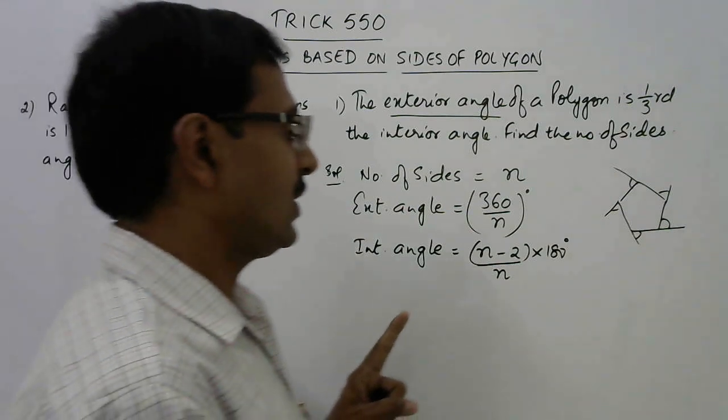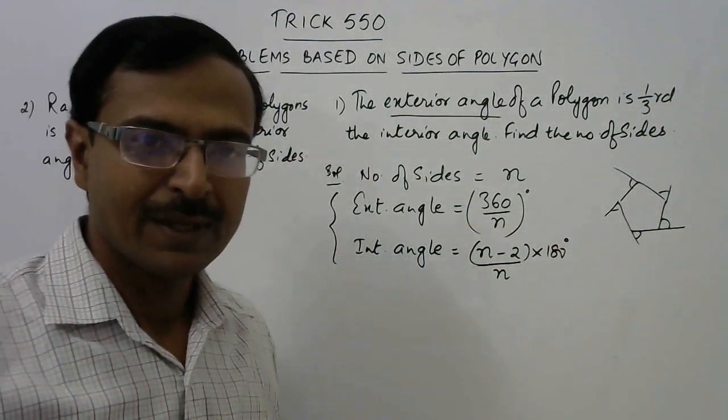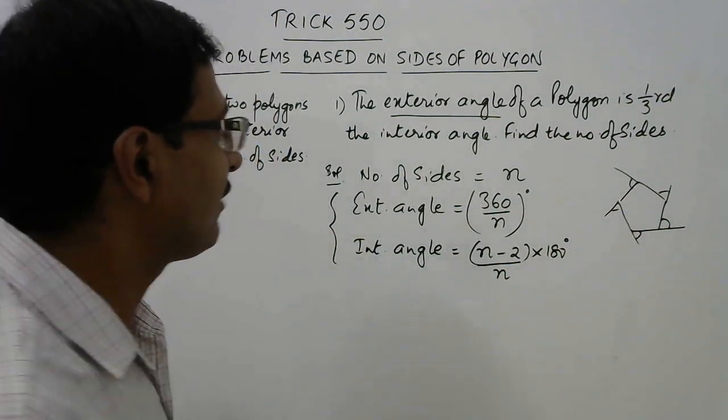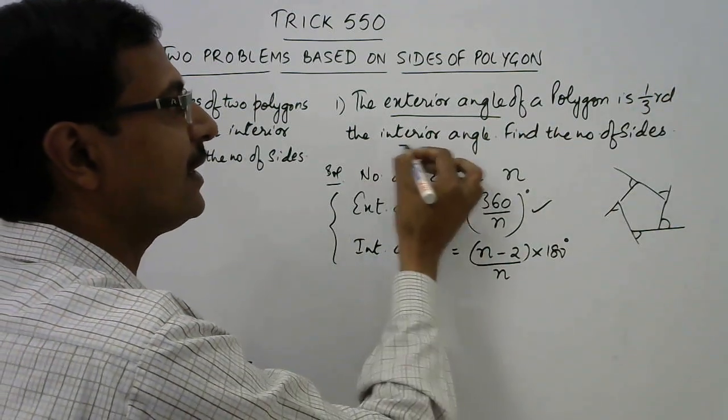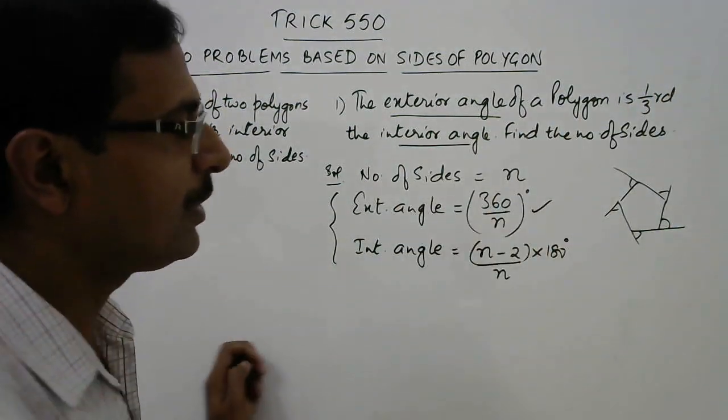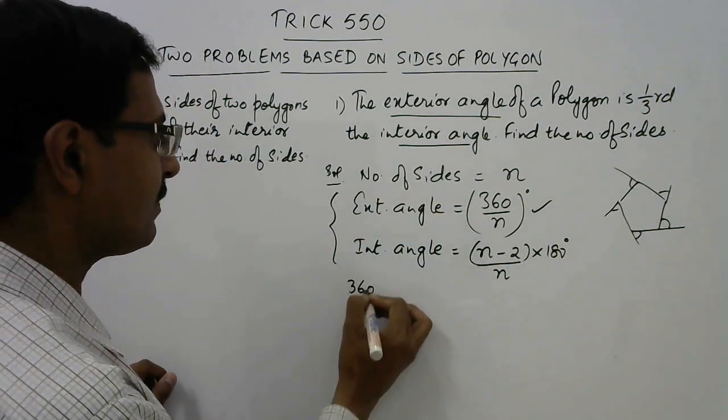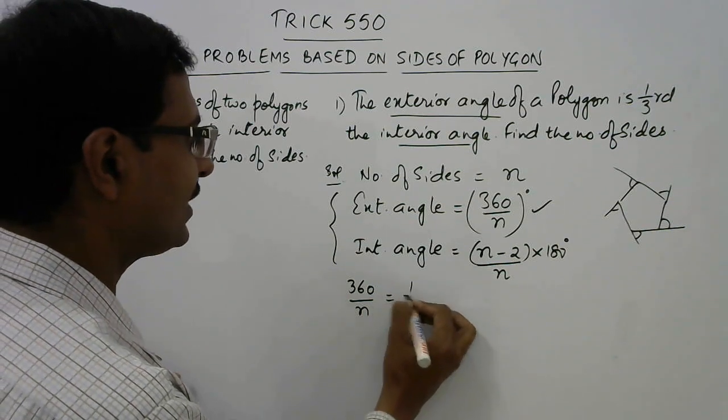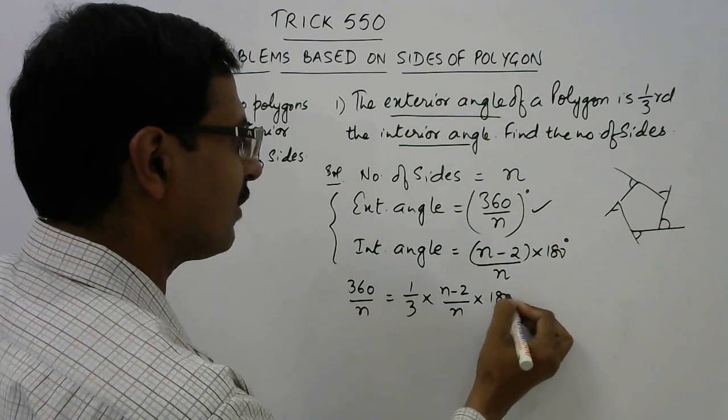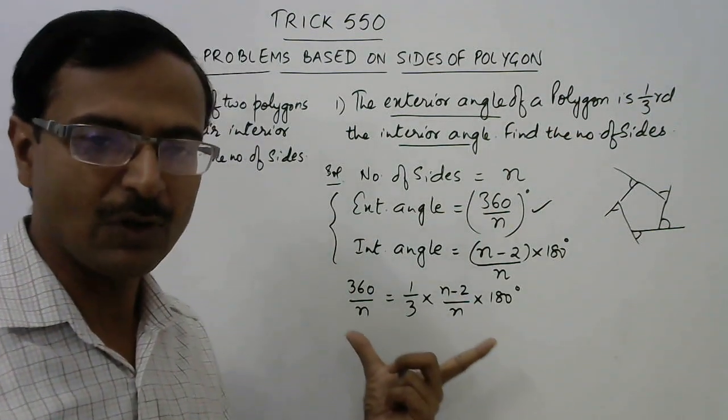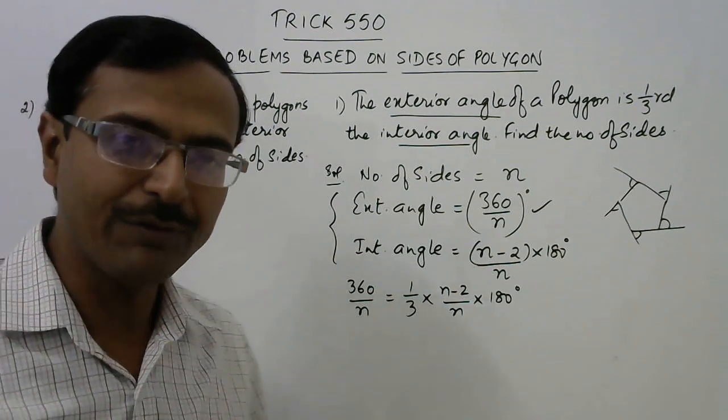This concept will be used to solve these two problems. In the first problem, we are given that the exterior angle of a polygon is one-third the interior angle. So this is the relationship given between the exterior angle and the interior angle. Let us formulate the equation: 360 upon n equals one-third of (n minus 2) upon n into 180 degrees. Now we need to find the number of sides, which is very easy. We already have a linear equation in one variable here which we can simplify and solve for the value of n.